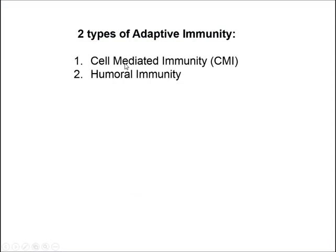There are two types of adaptive immunity: cell-mediated immunity and humoral immunity. What I'm going to explain on the following slides are concepts important for understanding either or both of these processes. I'll then explain each of them specifically in other videos, but first there are some shared concepts that are very important to look at.